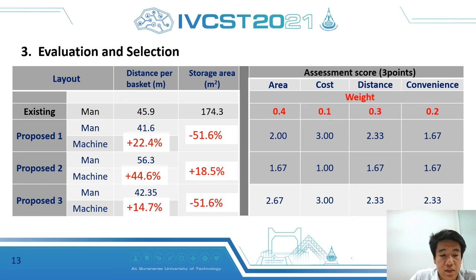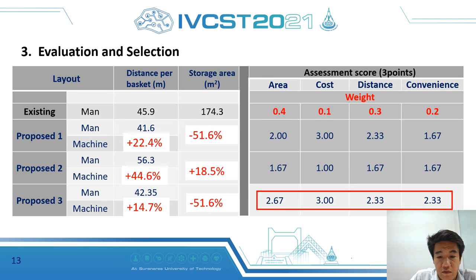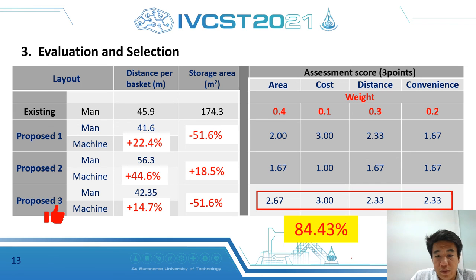The third part is the assessment by criteria. We and the group defined weights for each criterion: area 0.4, cost 0.1, distance 0.3, and convenience 0.2. After that, the group assessed scores on a three-level scale. The best score belongs to proposed layout number 3, with a weighted average score of 2.53, which calculates to 84.43%.